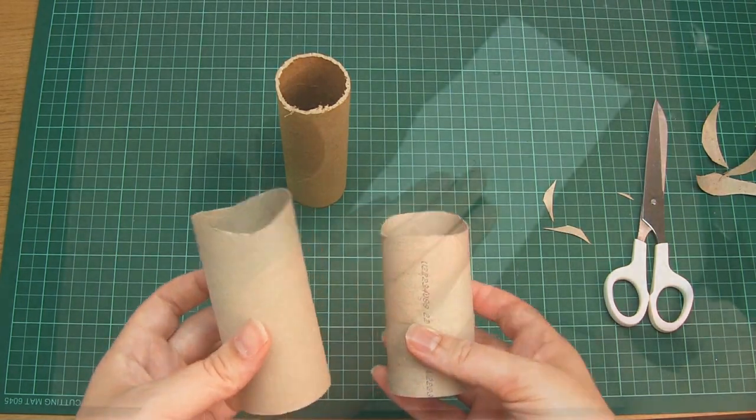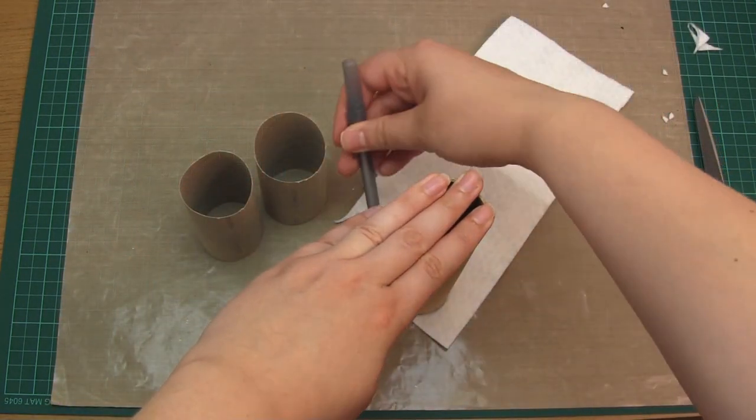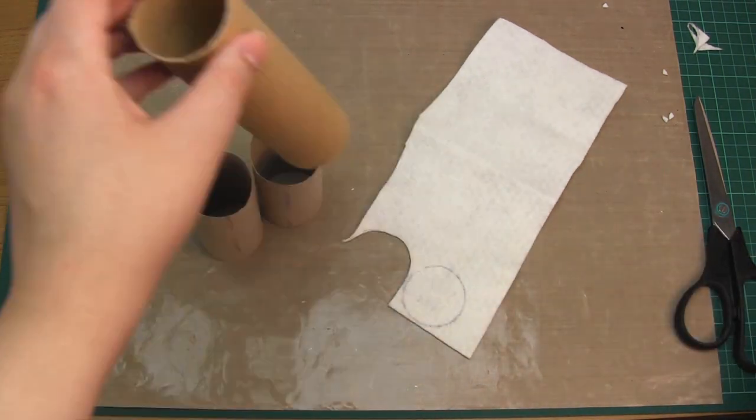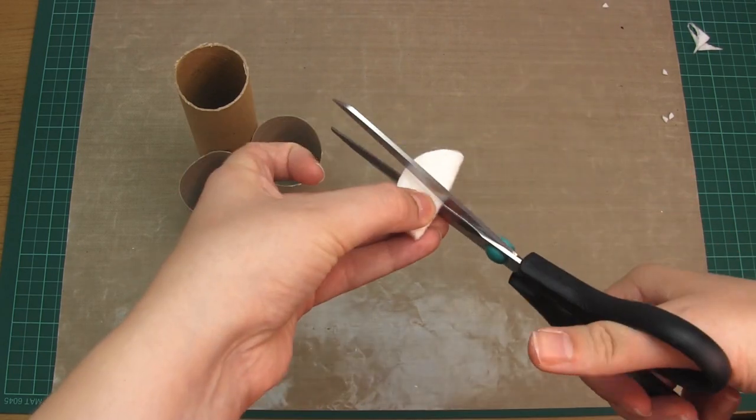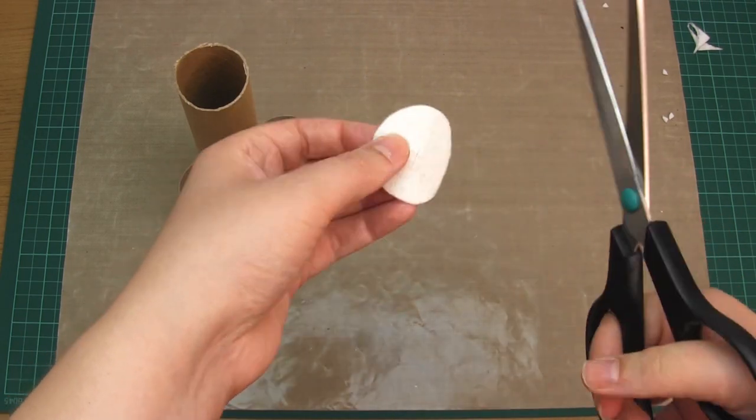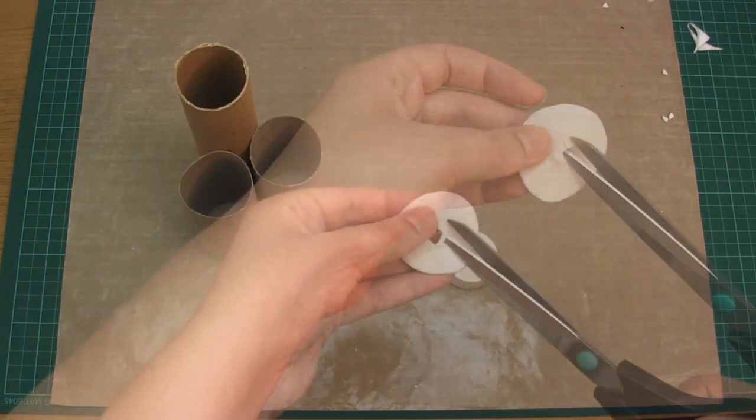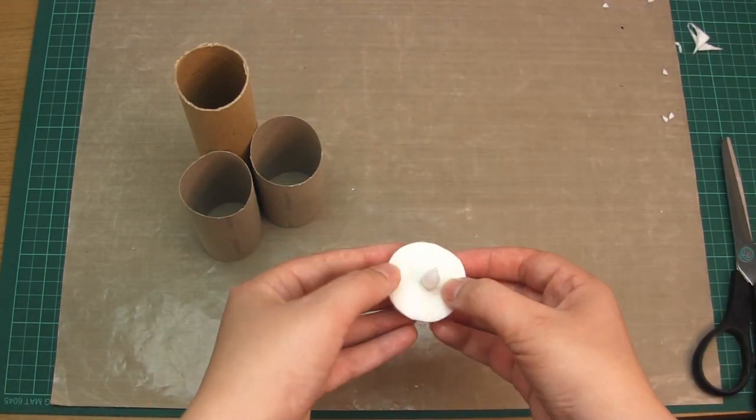Next, cut circles of white felt to fit inside each outer tube. Cut a hole in the middle of each circle large enough to fit over the flame of the battery-powered tea light.